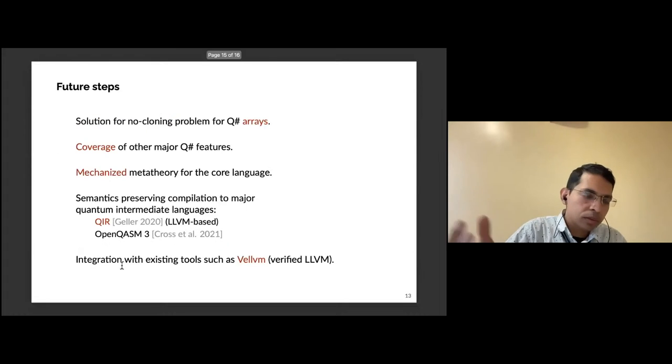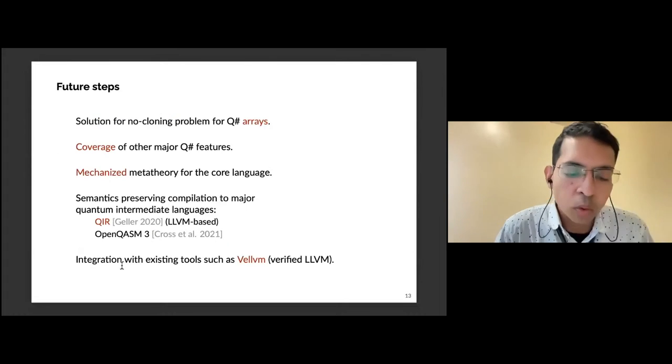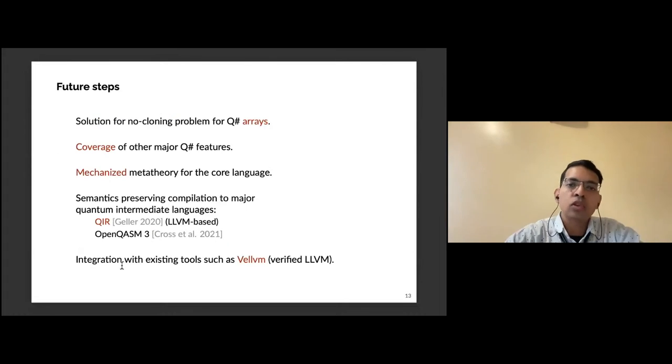This is just a sampling—there are a lot more things we can do in QSharp. Currently our solution does not support arrays, which are a common feature, so we would like to extend our work to that. There are other major QSharp features such as automating generation of adjoints. We are working on mechanization of the meta-theory, but the long-term goals are to do semantics-preserving compilation to languages like QIR and form a verified tool chain using existing projects such as Velum.